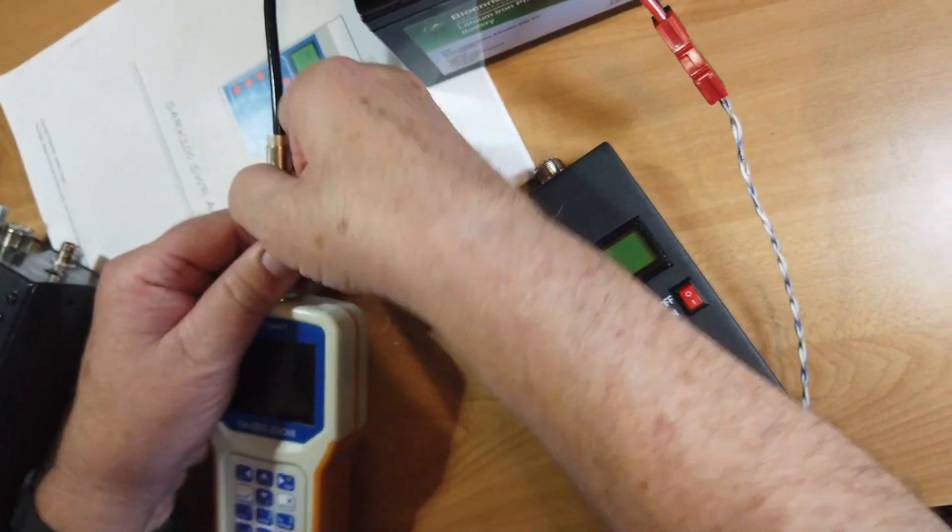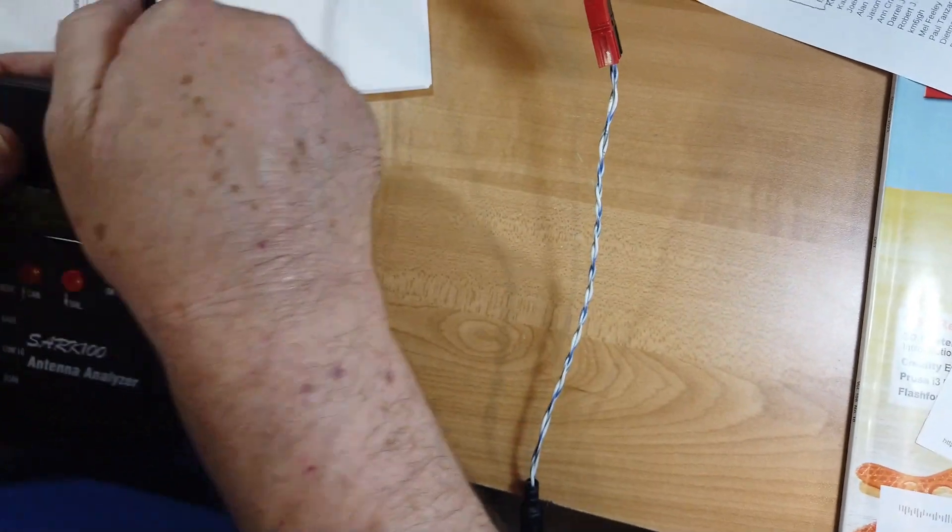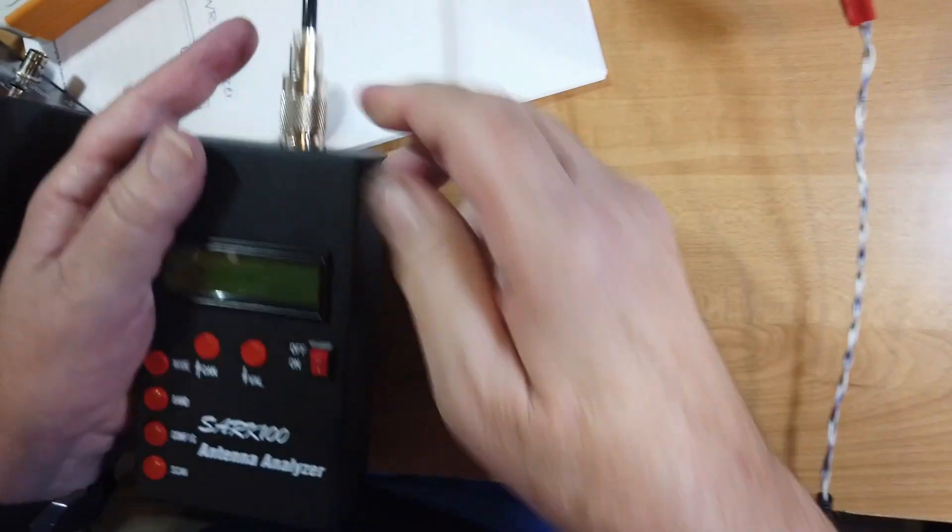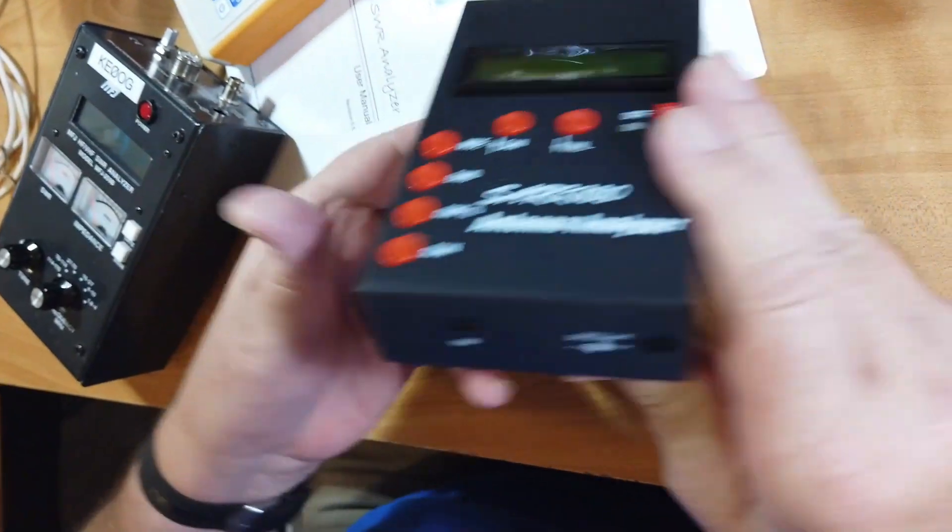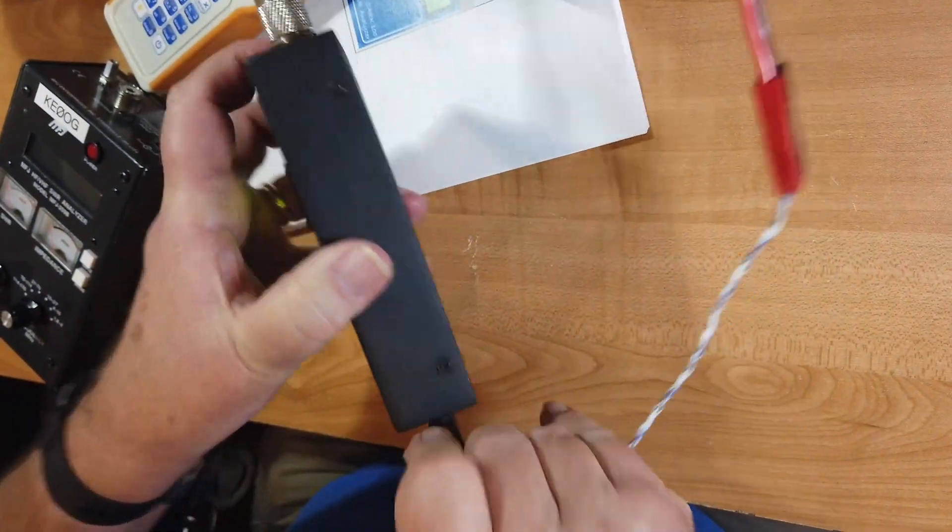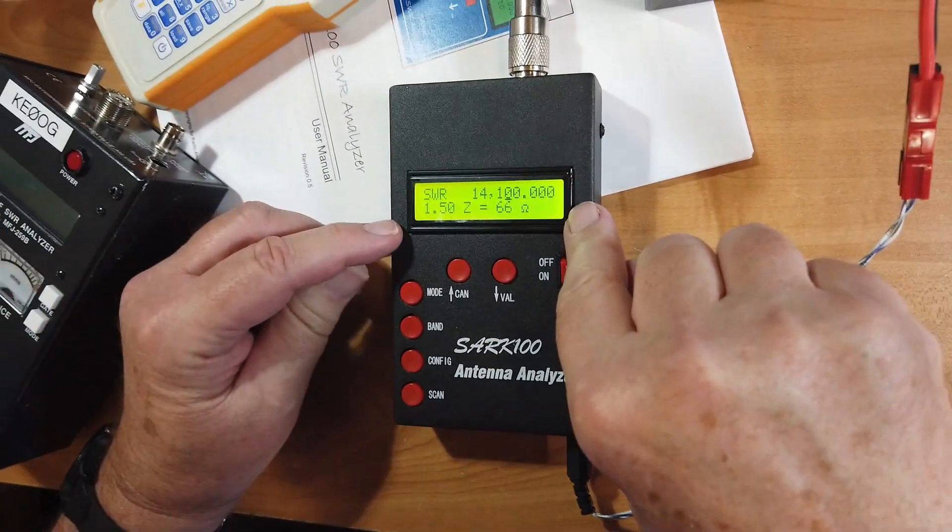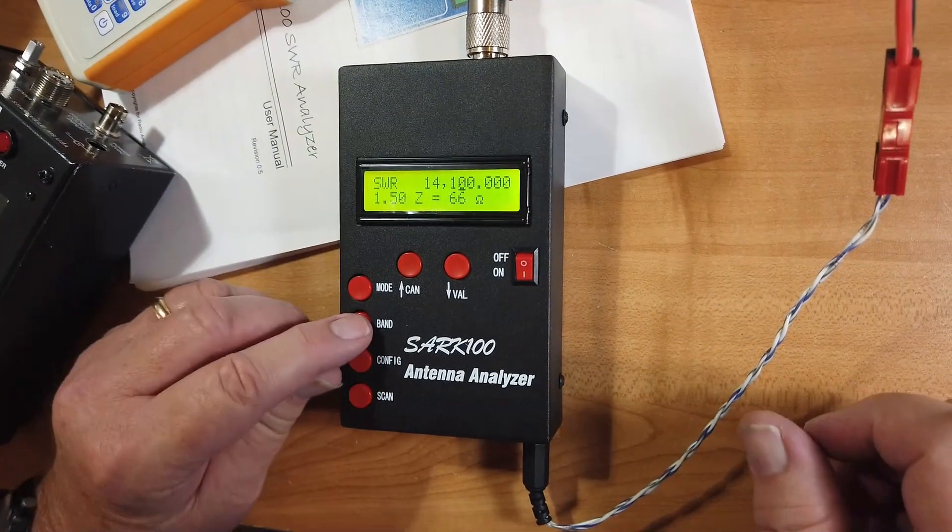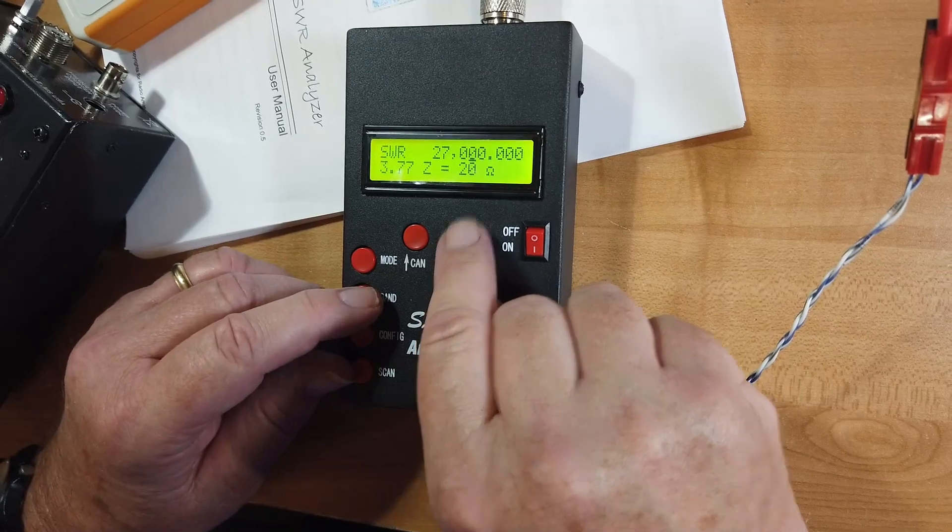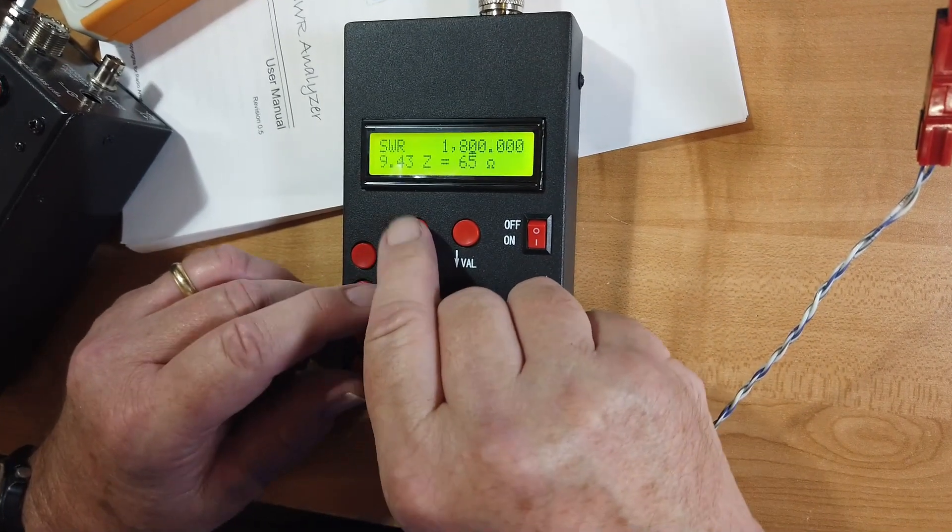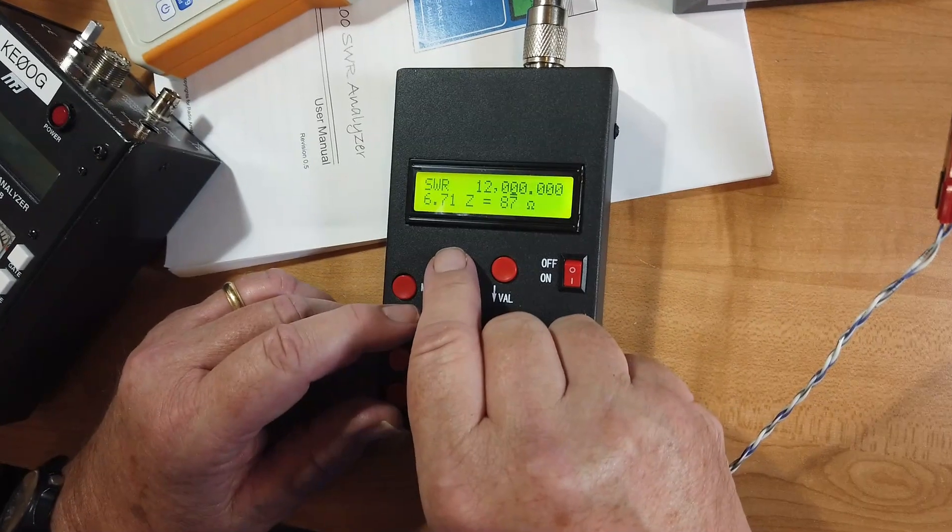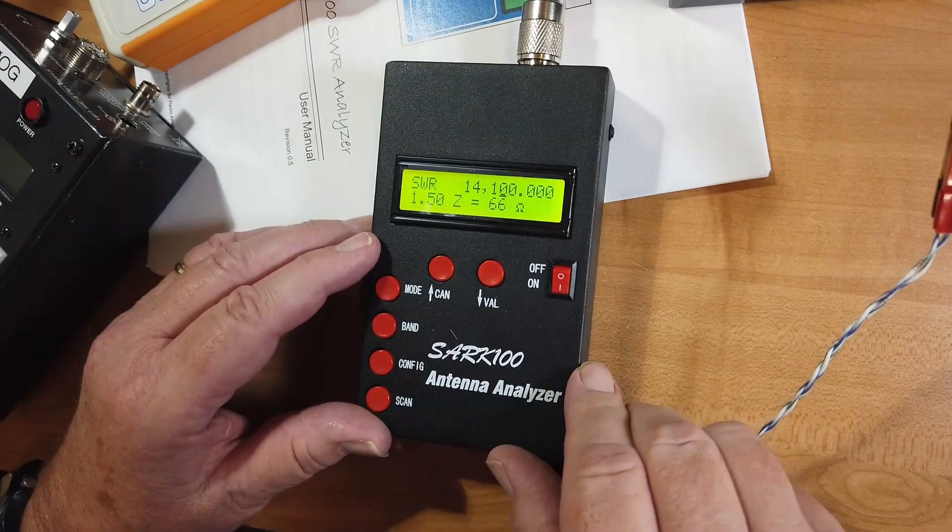And now, we will go to the SARK-100. Remember, the SARK-100 does everything that these other two do. Again, a connection to a computer. And we'll put the power on it. A SARK antenna analyzer. We're going to go to band 20.